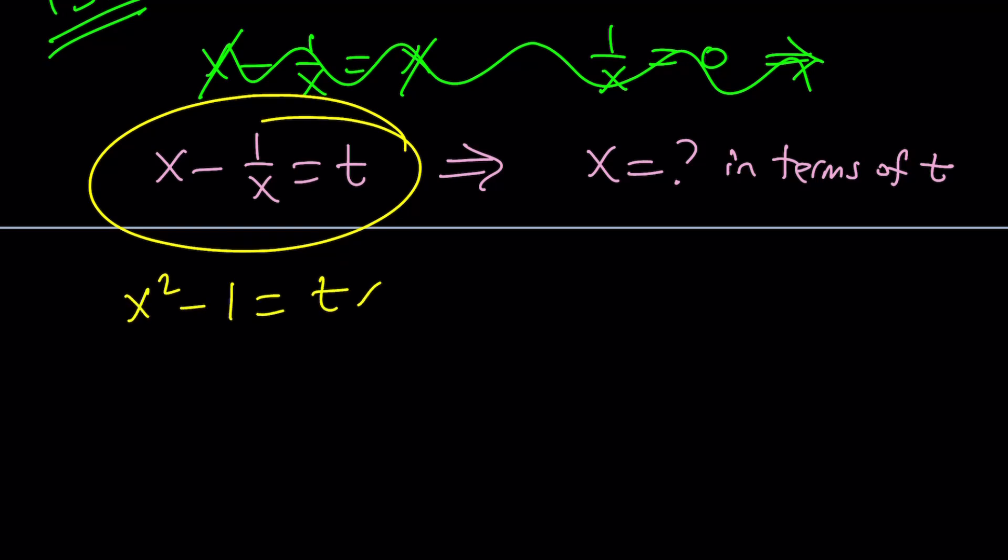And then x squared minus tx plus... Wait a minute, where does the plus come from? Minus 1 equals 0. And if you use the quadratic formula, negative b plus minus the square root of b squared minus 4ac, that should be a positive 4, divided by 2.